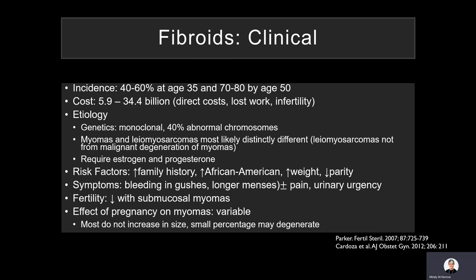After menopause, fibroids generally shrink and no longer have significant effects for the patient. Risk factors include family history, an increased incidence in the African-American population, as well as weight and decreased parity. Symptoms can be significant: bleeding, heavy menses, pain, pressure on the bladder or rectum, and there can be problems with fertility, specifically in women who have submucosal myomata.